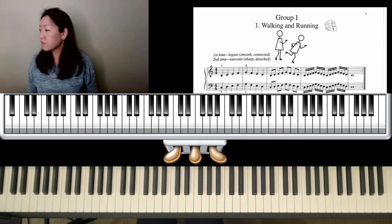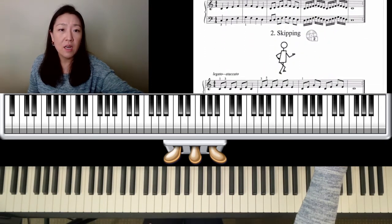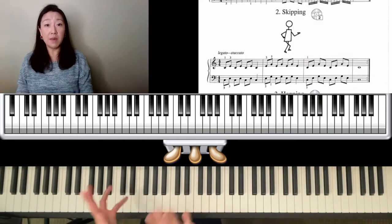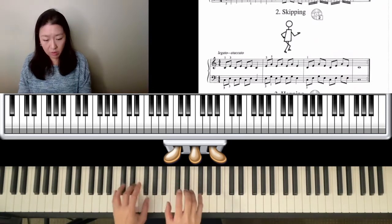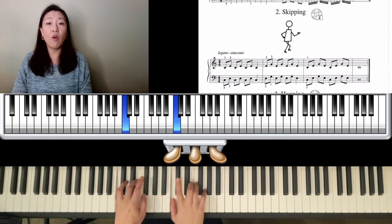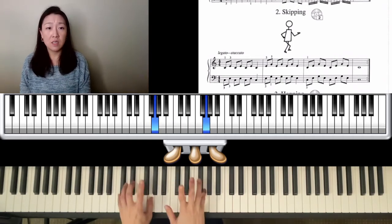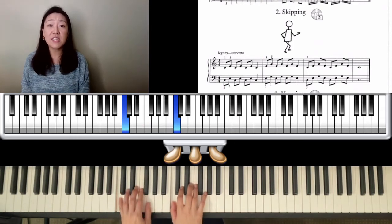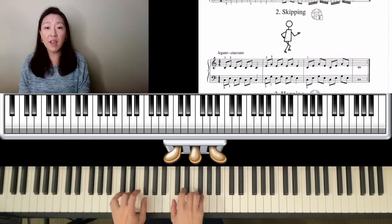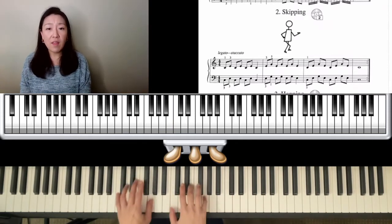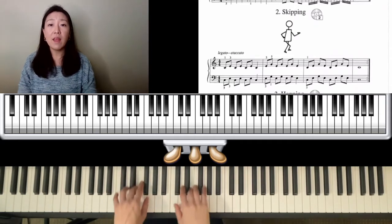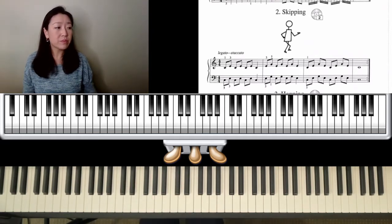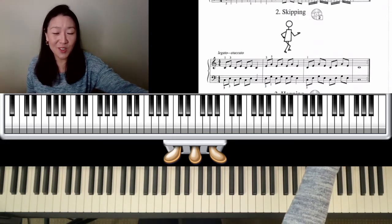Going on to our second exercise - Skipping. We're in the same position but literally skipping. Let's try staccato. I'm going to pull my fingertips towards me. Make sure your wrists are relaxed and fingertips are firm. I just realized I forgot to do the staccato for Walking and Running, but we shall move on.